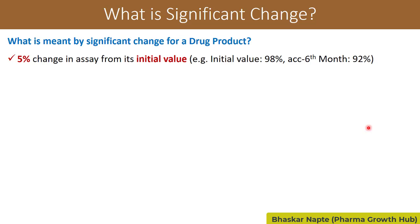An increase in assay can occur in semi-permeable containers for liquid or aqueous-based products — if there is a loss of water, your label claim and assay value can increase. So if the assay is five percent more than the initial value, significant change has occurred. For example, if the initial value is 98% and the six-month accelerated value is 92%, the difference is six percent. Always calculate the absolute difference from the initial assay value, not the relative difference.